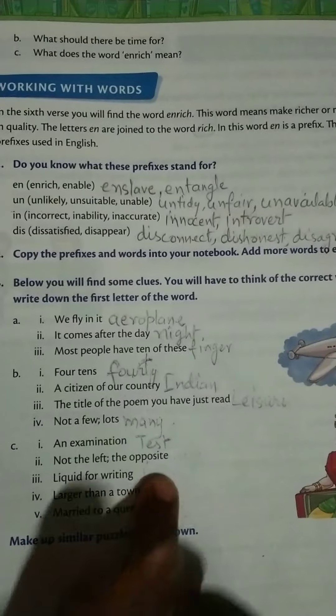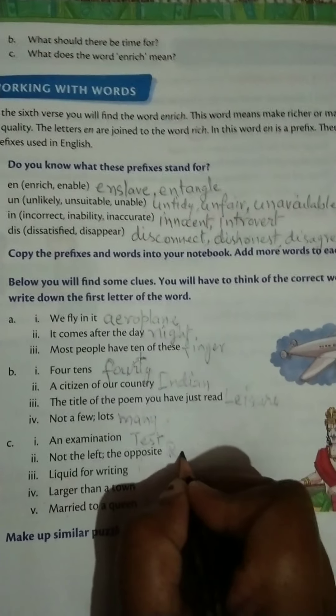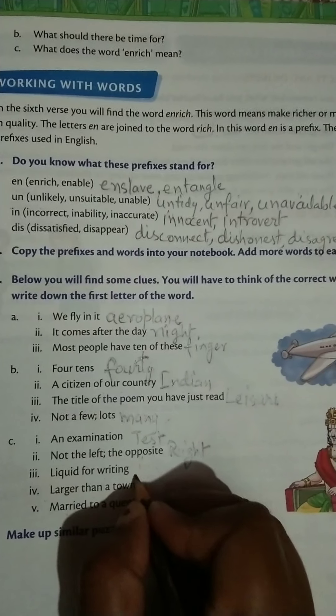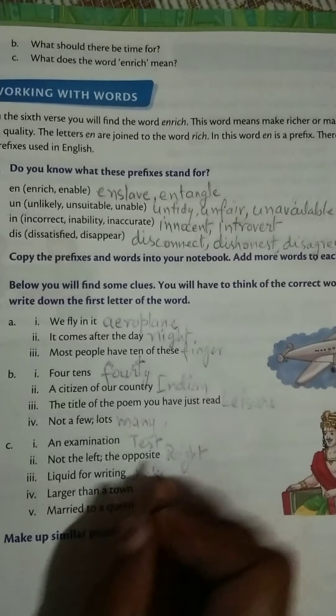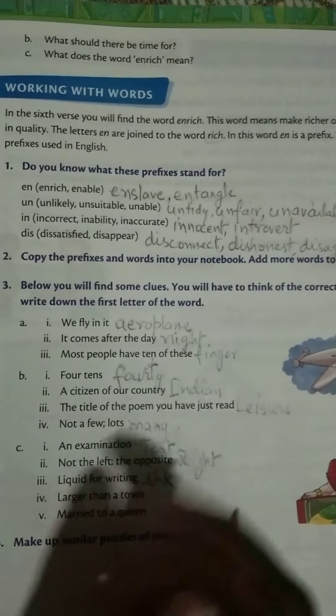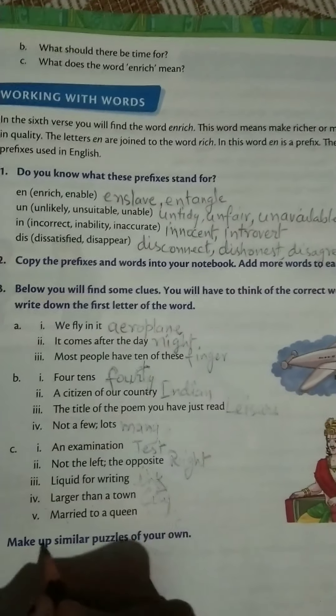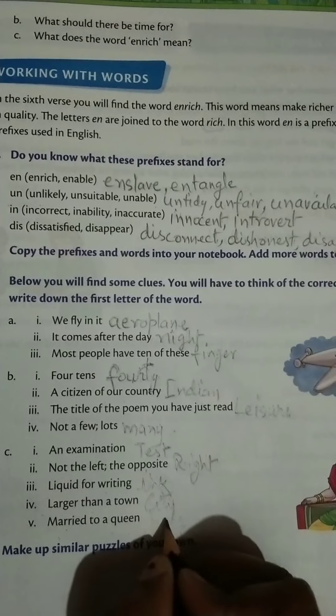Not the left - it is right. Opposite of left is right. Liquid for writing - it is ink. Larger than a town - it is city. Married to a queen - he is king.